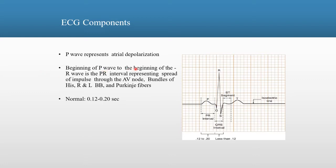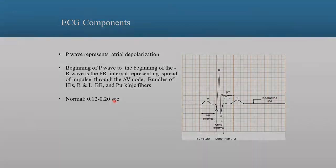The beginning of the P-Wave to the beginning of the R-Wave is called the PR interval, representing the spread of the impulse through the AV node, bundle of His, right and left bundle branch, and Purkinje fibers. The normal range or time is 0.12 to 0.20 seconds.